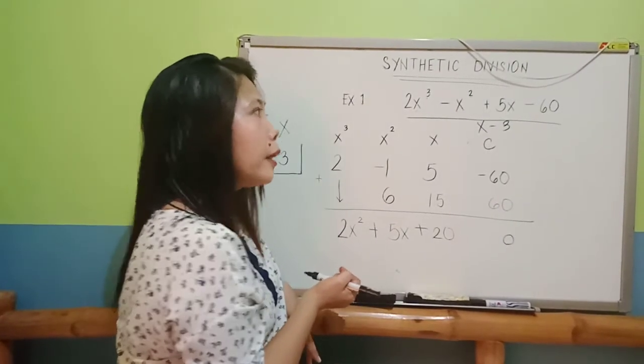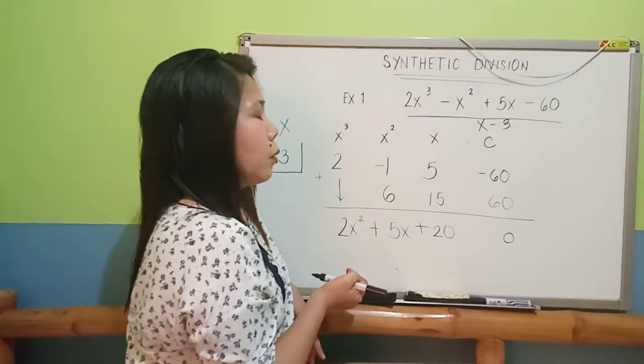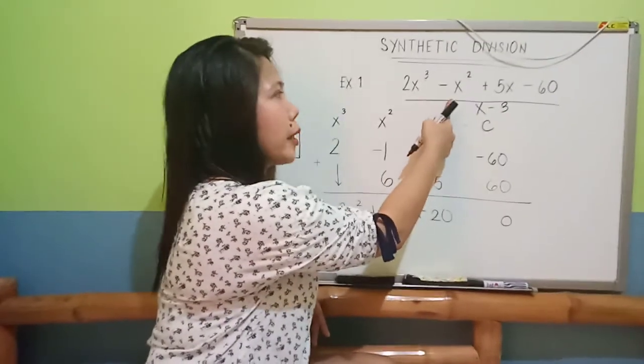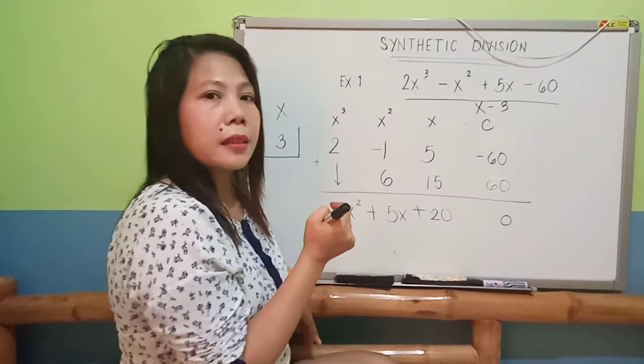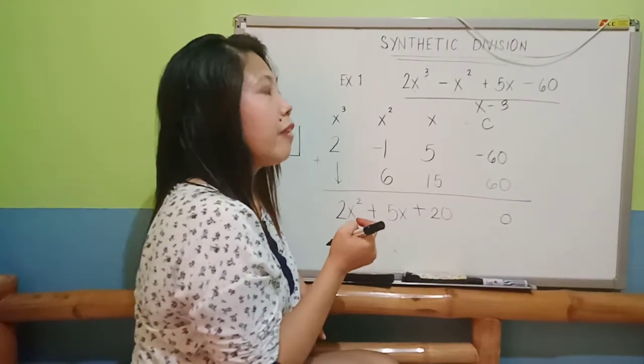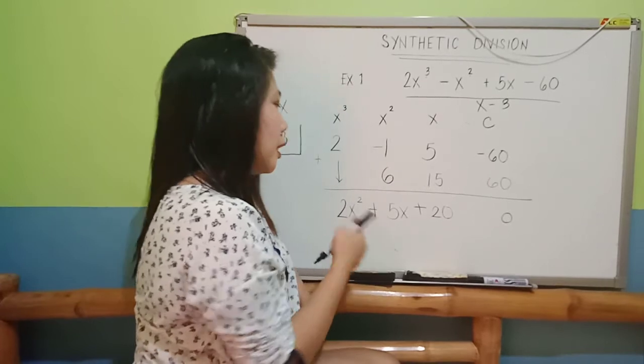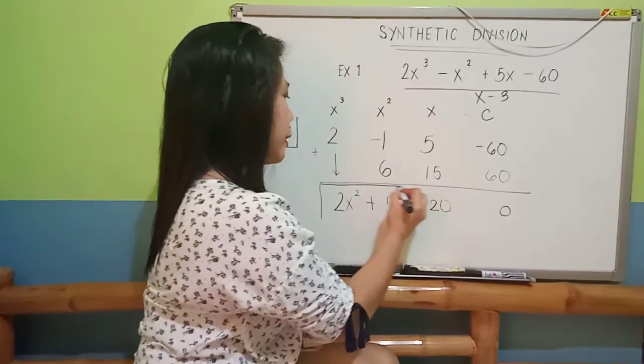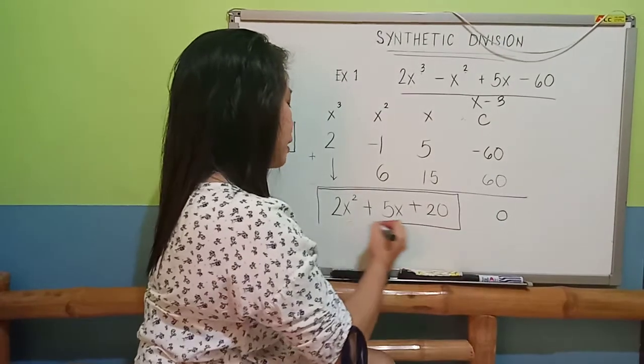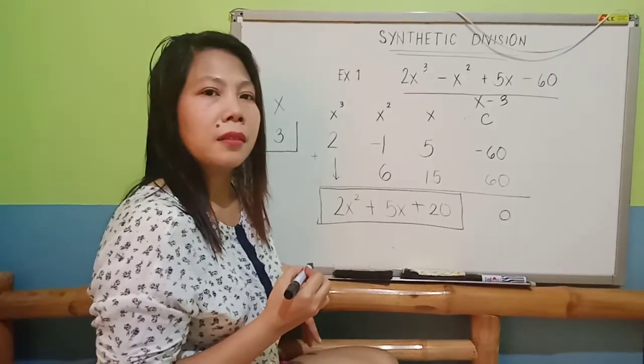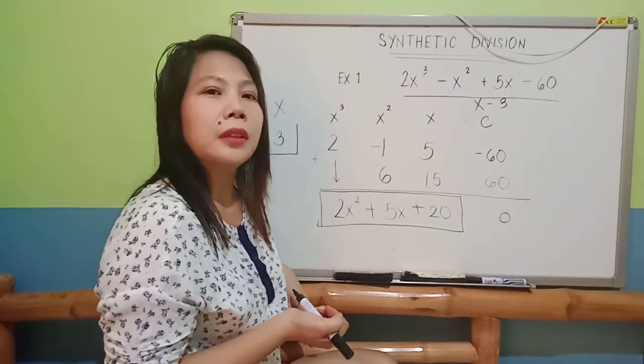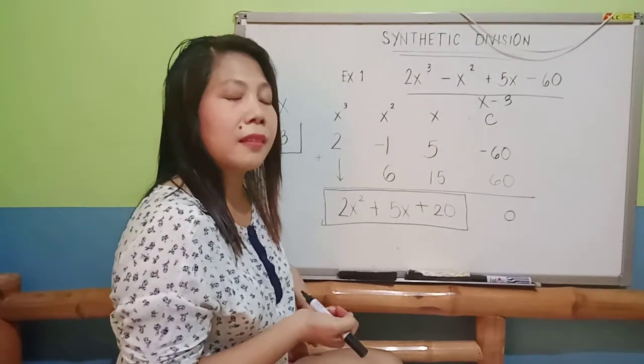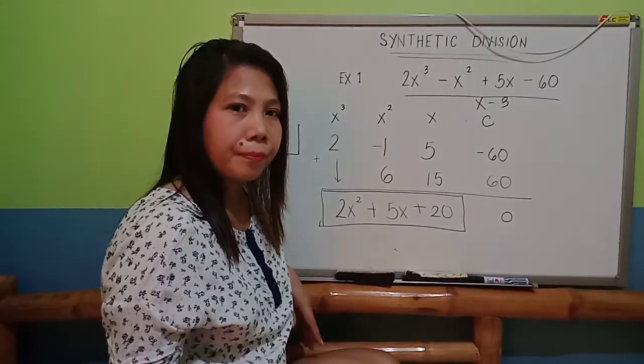What would be your quotient? The quotient for 2x cubed minus x squared plus 5x minus 60 divided by x minus 3 is equal to 2x squared plus 5x plus 20. There you go. That is the answer or the quotient using synthetic division. Thank you.